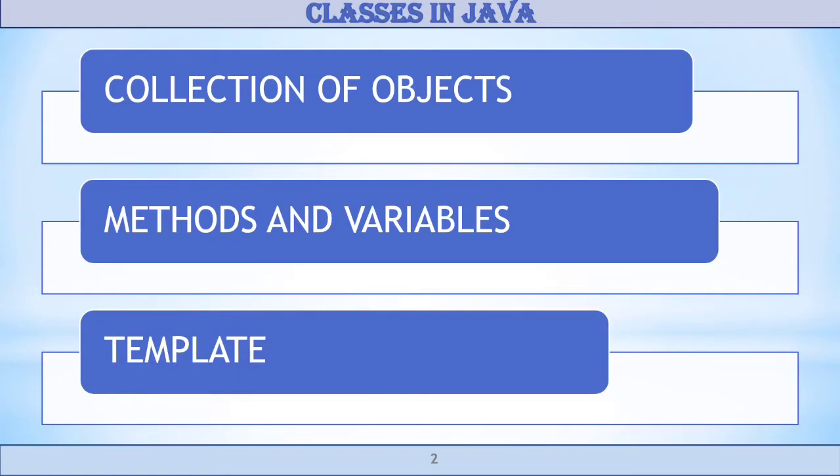Collection of objects is called a class. A class is a collection of variables and methods. A class can also be defined as a template or blueprint that describes the behavior or state of that object.